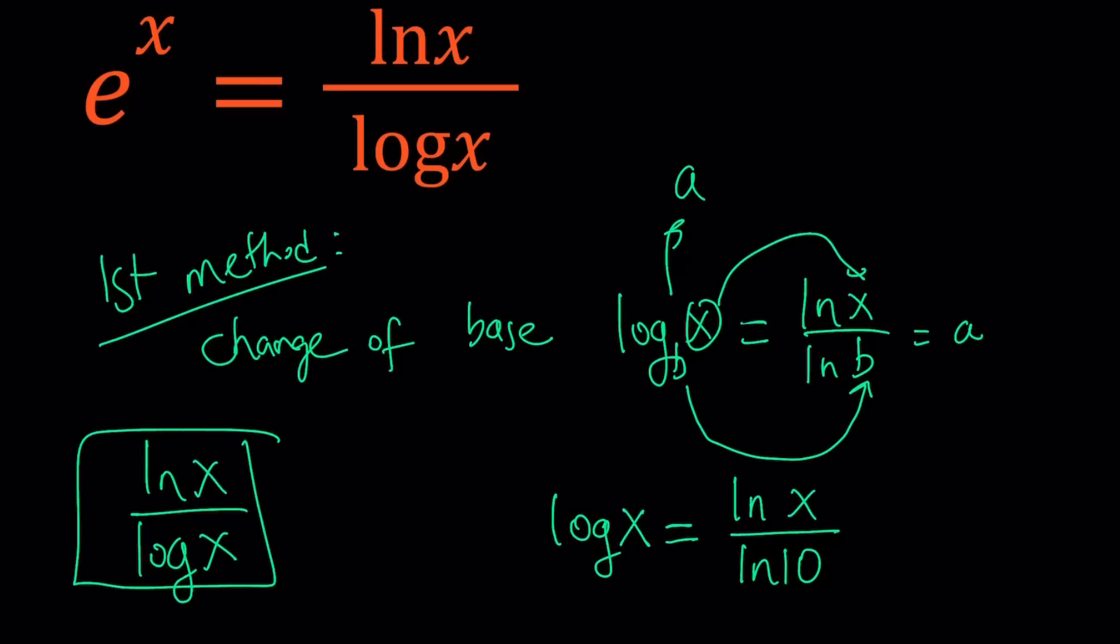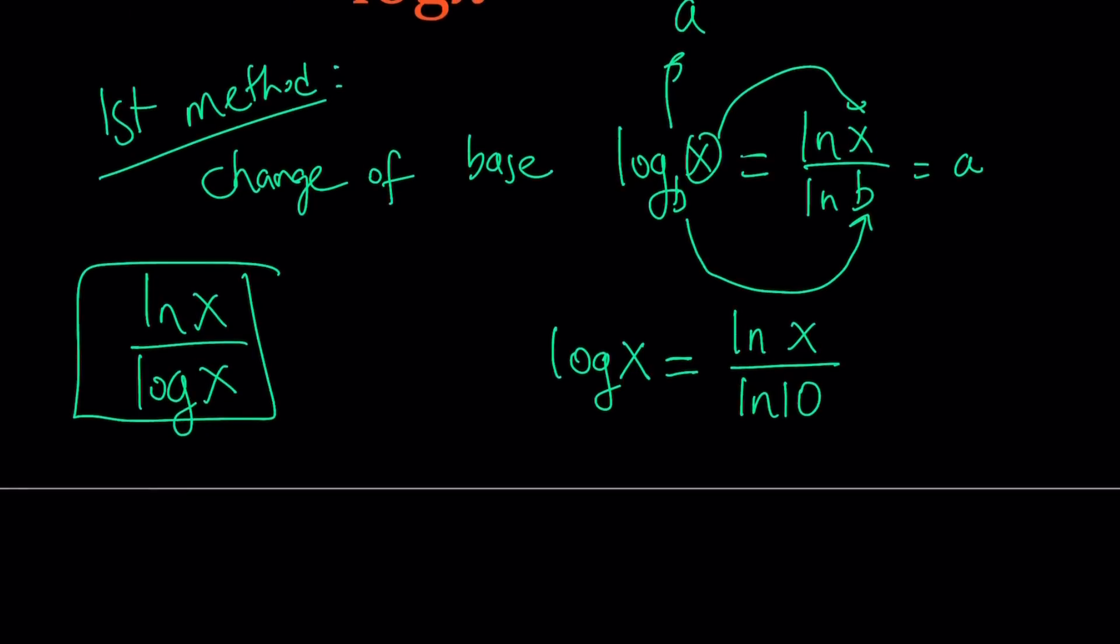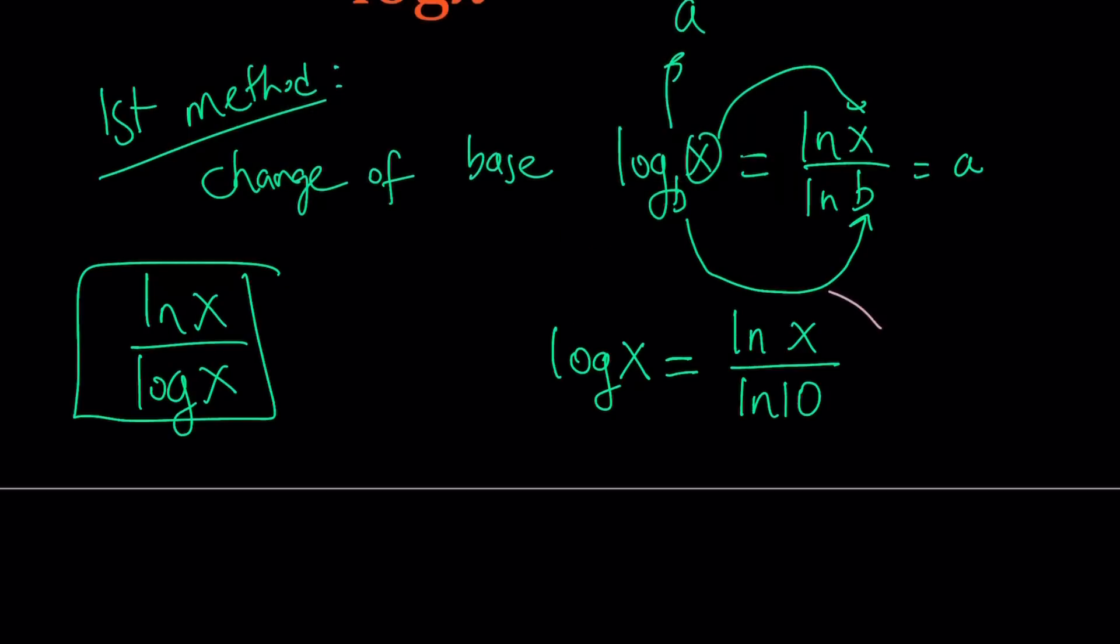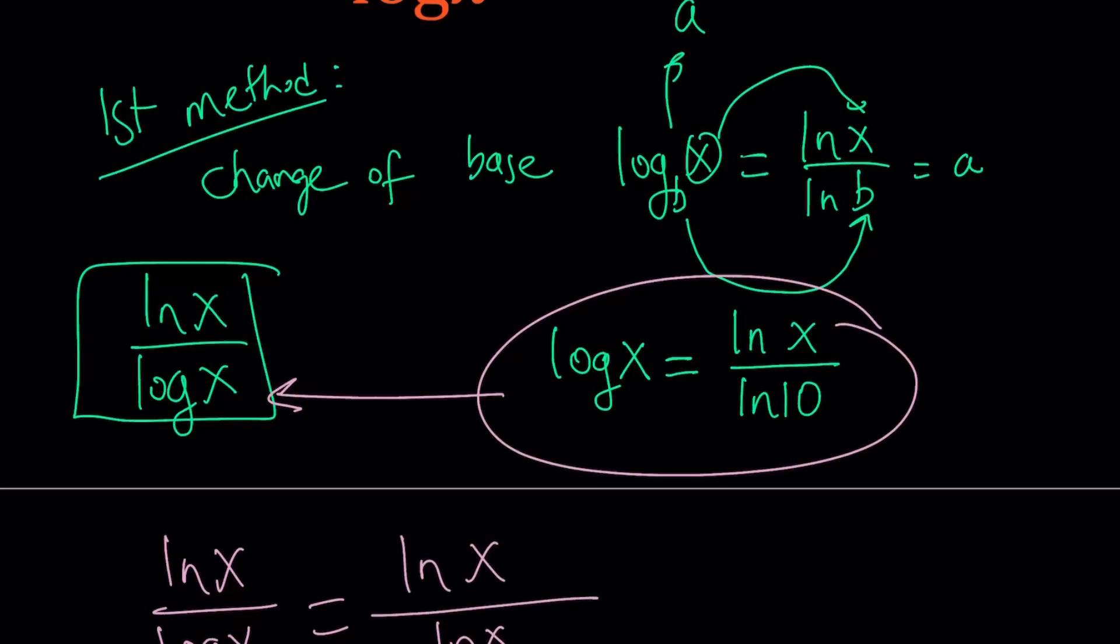And do not forget, ln 10 is constant. Awesome. So let's go ahead and take a look at this equation from that perspective. How does this help us? This formula is going to help us a great deal because now we can go ahead and replace log x with ln x over ln 10. Let's do it. ln x over log x can be written as ln x over ln x over ln 10.